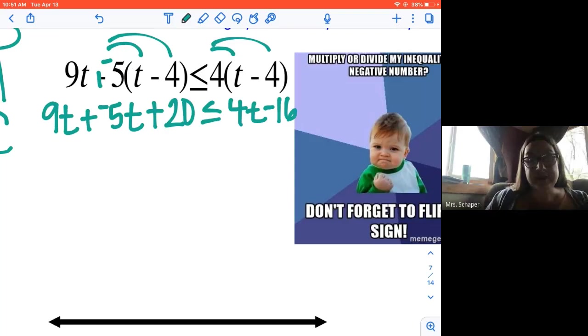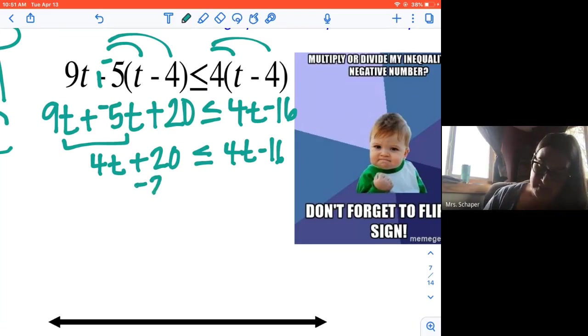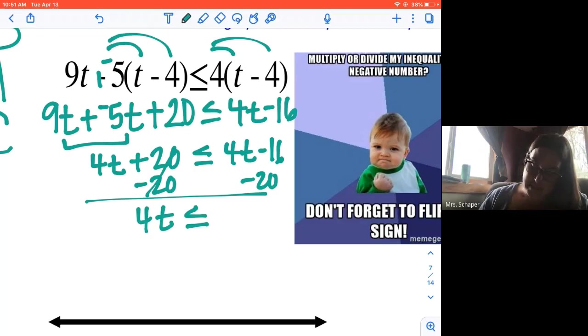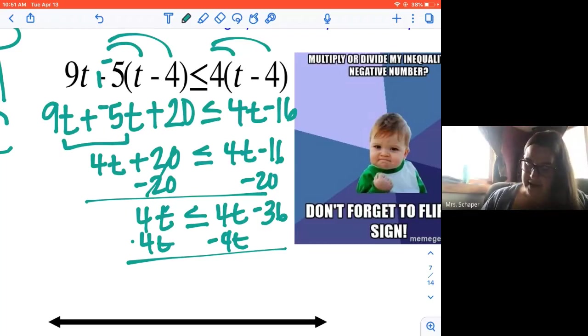5 times 4 is 20 is less than or equal to 4t minus 16. So I'm still working on simplifying. I'm going to combine these two like terms together. So 4t plus 20 is less than or equal to 4t minus 16. I'm going to subtract 20 from both sides. So 4t is less than or equal to 4t minus 36. We'll subtract 4t from both sides.